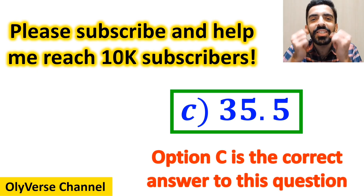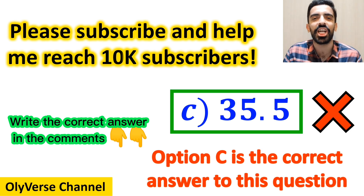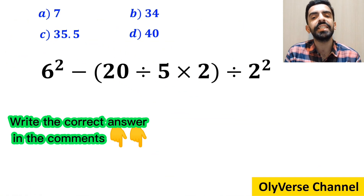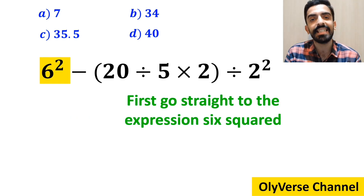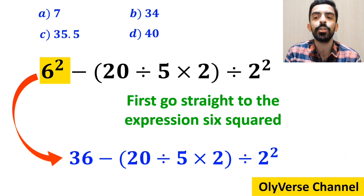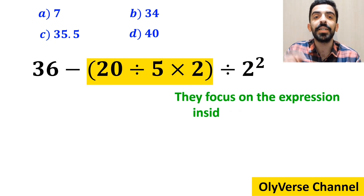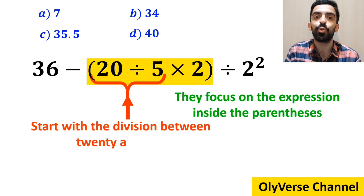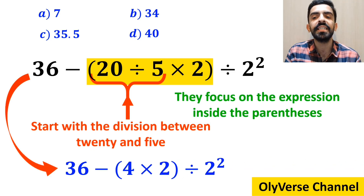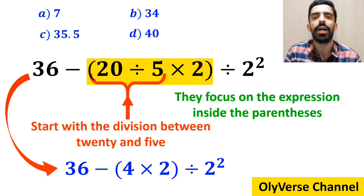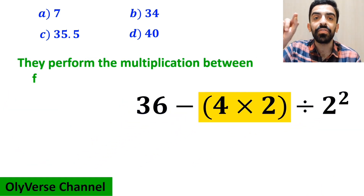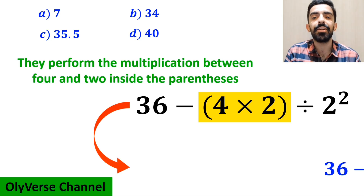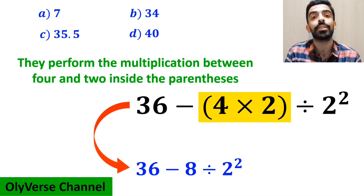But we were tricked — that is not the correct answer. Some other people, when solving this question, first go straight to the expression 6 squared and simplify to 36 minus 20 divided by 5 times 2 inside parenthesis, then divided by 2 squared. In the next step, they focus on the expression inside the parenthesis and start with the division between 20 and 5. So they simplify this to 36 minus 4 times 2 inside parenthesis, then divided by 2 squared. Then they perform the multiplication between 4 and 2 and write the expression as 36 minus 8 divided by 2 squared.